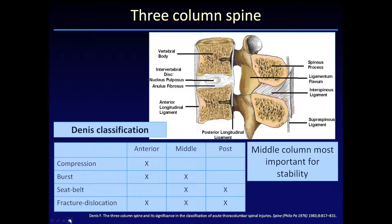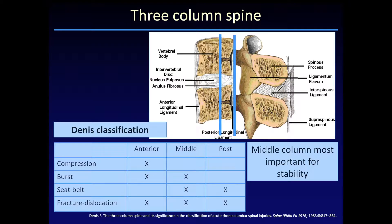During the 80s and 90s, at least in the United States, the Denis classification was widely used. The main difference between this and the Holdsworth classification was that Denis introduced the concept of the middle column, which he considered the most important for providing spinal stability. The middle column consisted of the posterior portion of the vertebral body, the posterior longitudinal ligament, and the annulus. He thought that this had to be injured for the spine to become unstable. So in the Denis classification, this becomes critical — other than compression fractures limited to the front two-thirds or so of the vertebral body, he thought that all others had the potential for either mechanical or neurologic instability.